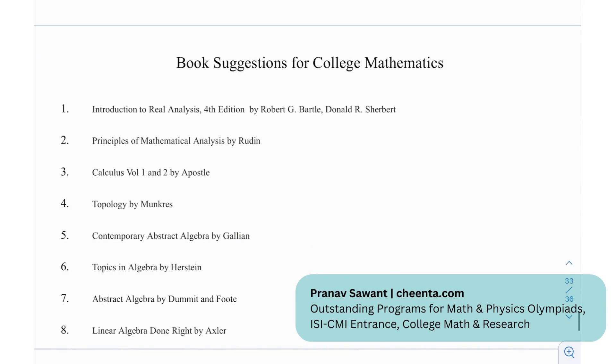Okay so moving on, we have some book suggestions for college mathematics: Introduction to Real Analysis, Principles of Mathematical Analysis by Rudin, Calculus Volume 1 and Volume 2 by Apostol, Topology, Contemporary Abstract Algebra by Gallian, Topics in Algebra by Herstein, Abstract Algebra by Dummit and Foote, and Linear Algebra Done Right by Axler.